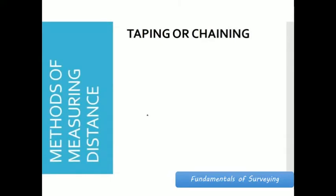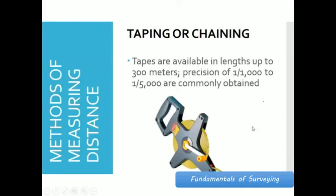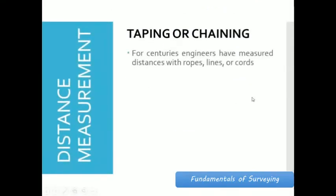Here are the methods of measuring distance in surveying. The first one is by using tape or chain. Tapes are available in lengths up to 300 meters with a precision of 1 over 1000 to 1 over 5000. In the surveying laboratory, we have available lengths of 50 meters and 100 meters. Engineers before used ropes, lines, cords, in measuring distance, but these tools are prone to elongation and lead to errors in measurement.